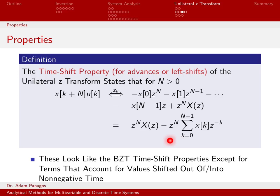This bullet summarizes what's happening as we do this time shift with the unilateral Z-transform. It looks just like the bilateral Z-transform, except for these extra terms that account for what has either shifted out of positive time — in the case of advances — or shifted into positive time — in the case of right shifts. Let's now specialize this for concrete values of n.